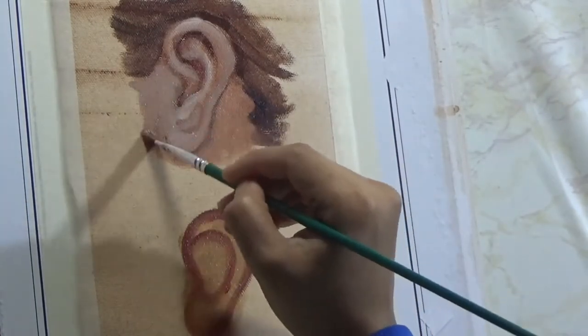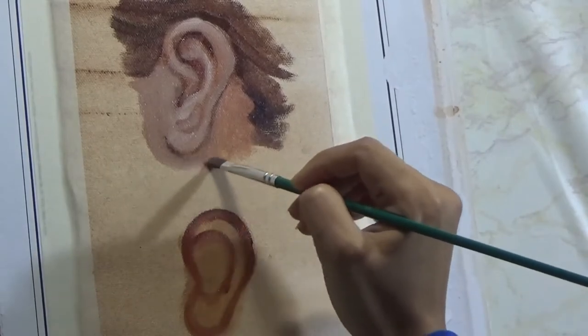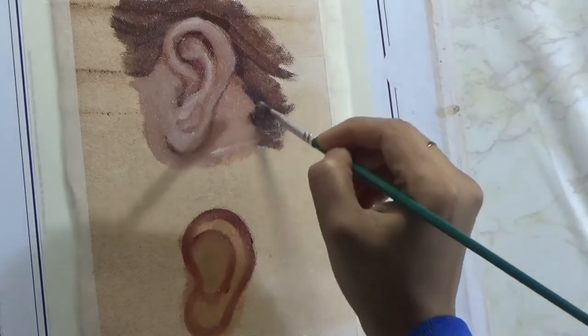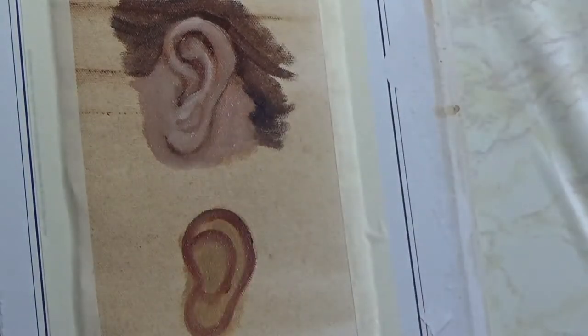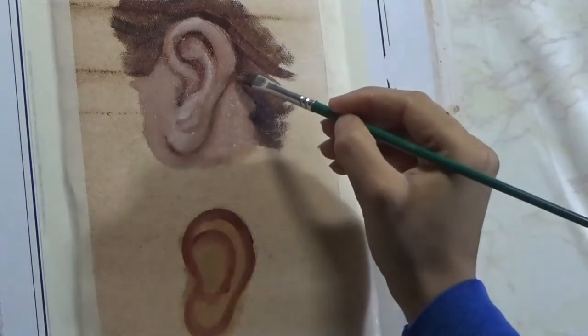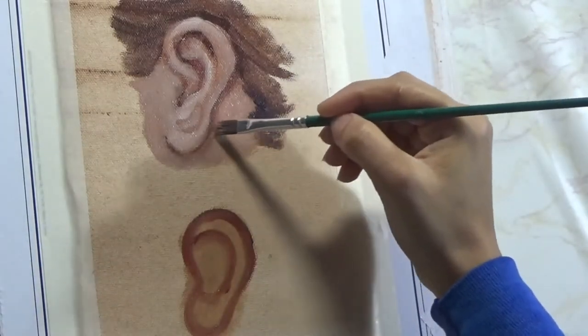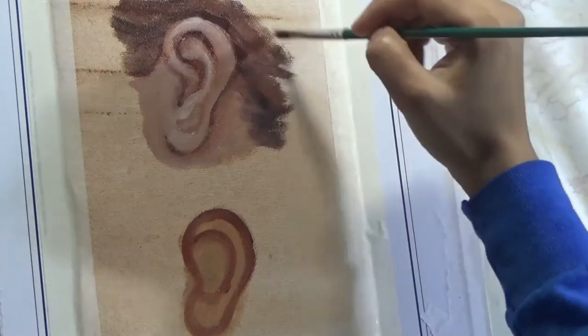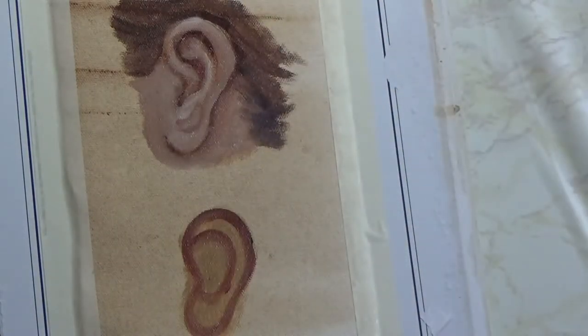Now, like any other parts of the face or body, ear has a lot of crevices, a lot of high points and low points. And obviously the high points will reflect more light and will have the highlights, and the low points or the crevices or the indentations will be where the darker shadows will be.